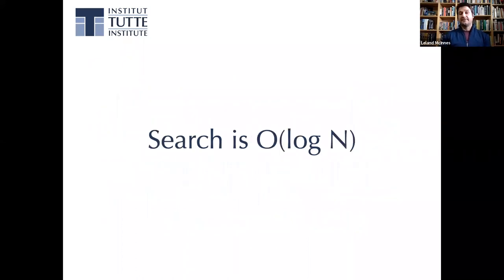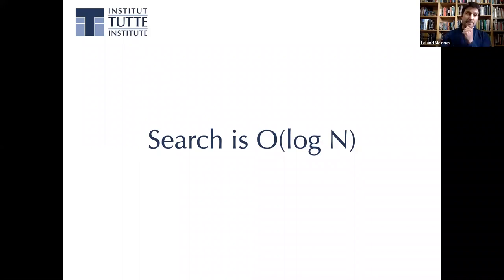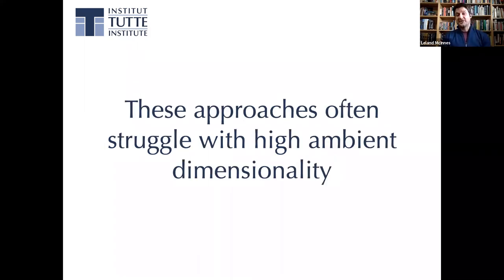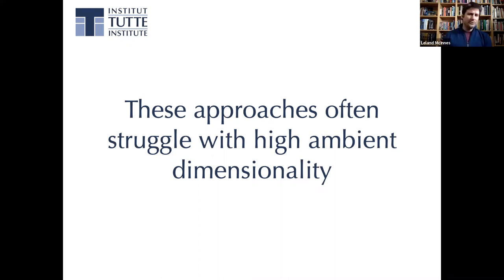To search for the nearest neighbors of a point, you find the leaf node of that tree that the query falls into. The exact nearest neighbor may or may not be in that leaf — the query might be on the boundary of a split, in which case the nearest neighbors might be in a different node. This gives a starting point: you compute nearest neighbors to things in the leaf, get a bound on how far away the nearest neighbor can be, and start working back up the tree. This gives search complexity logarithmic in the number of training samples.